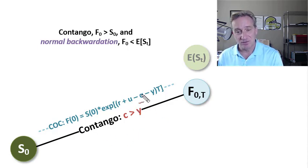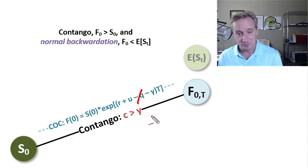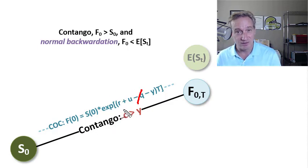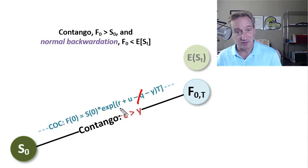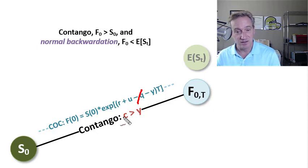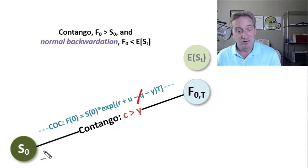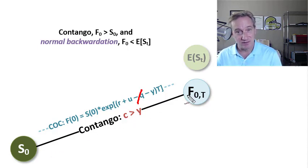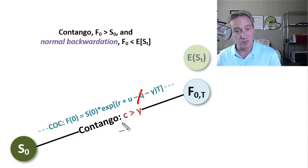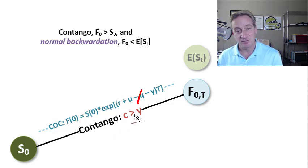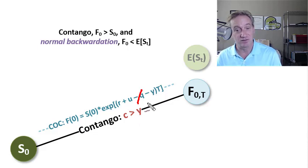In a consumption commodity, typically there won't be a dividend or income, so we'll assume that's zero. For a consumption commodity, the two cost of carry factors tend to be the risk-free rate cost of financing and the storage cost. So R plus U is the cost of carry. That first inference we make with a contango is that if it's upward sloping, the cost of carry is outweighing or is greater than the convenience yield.